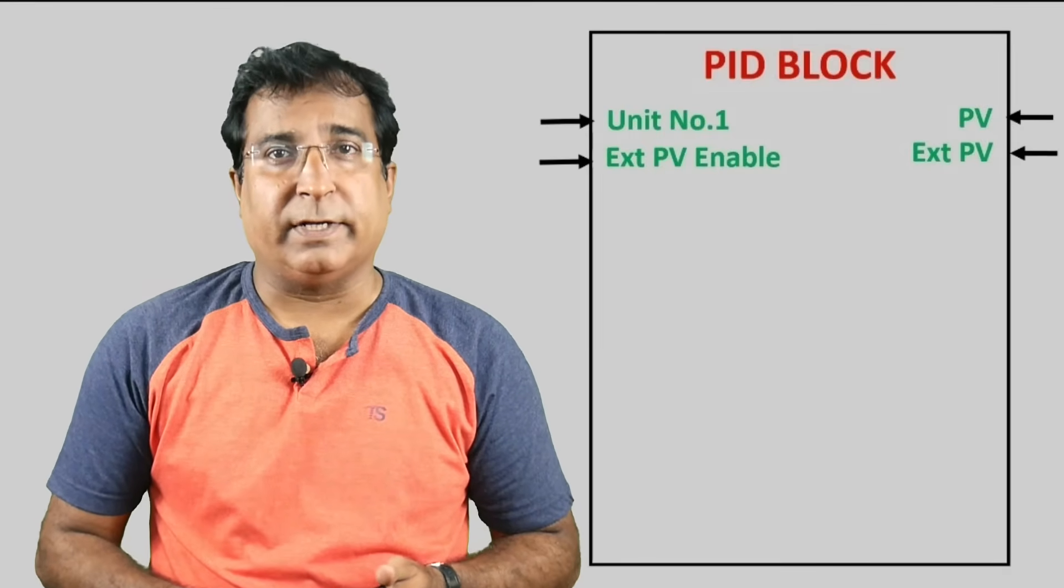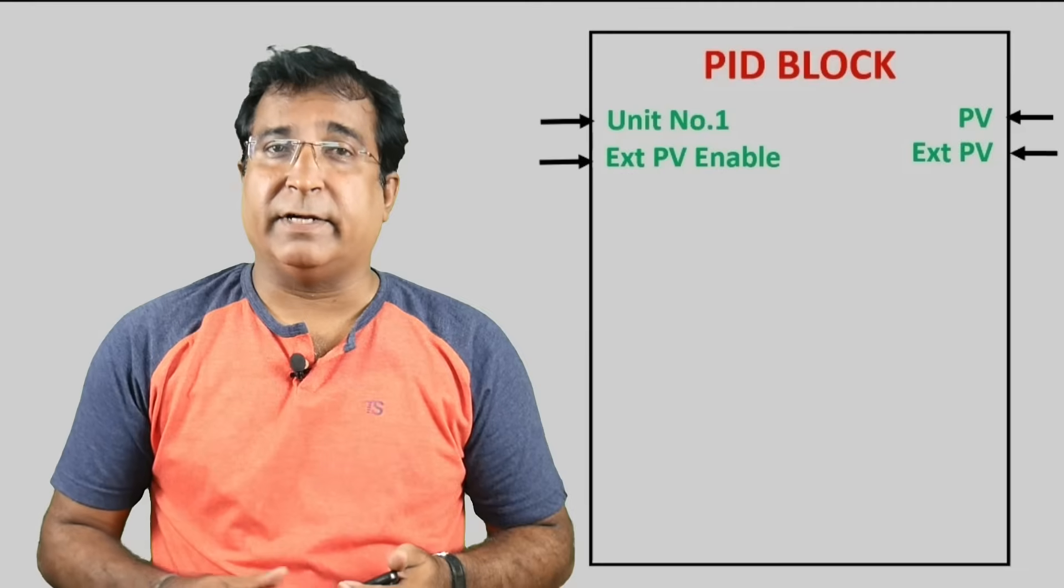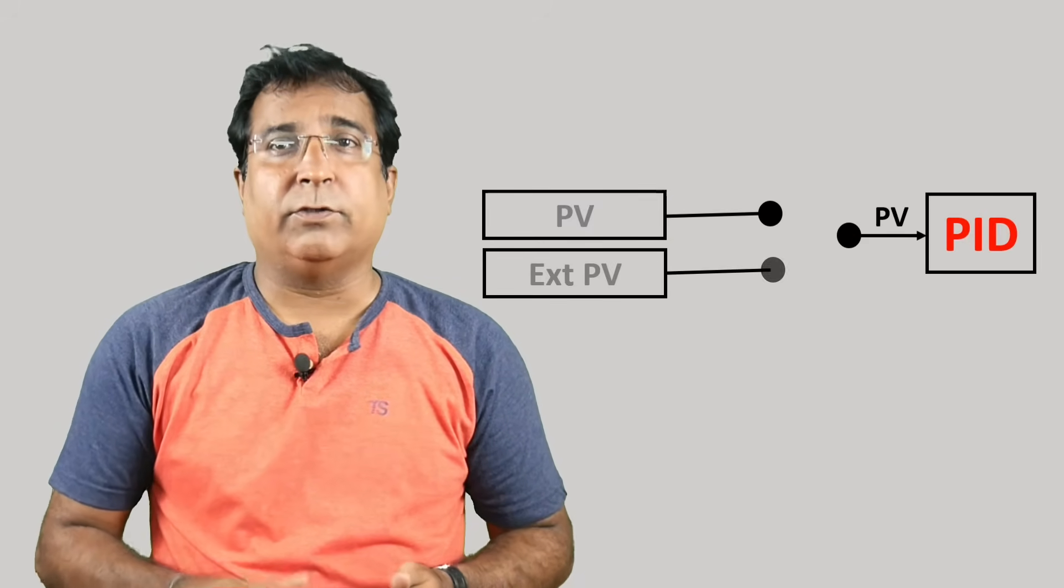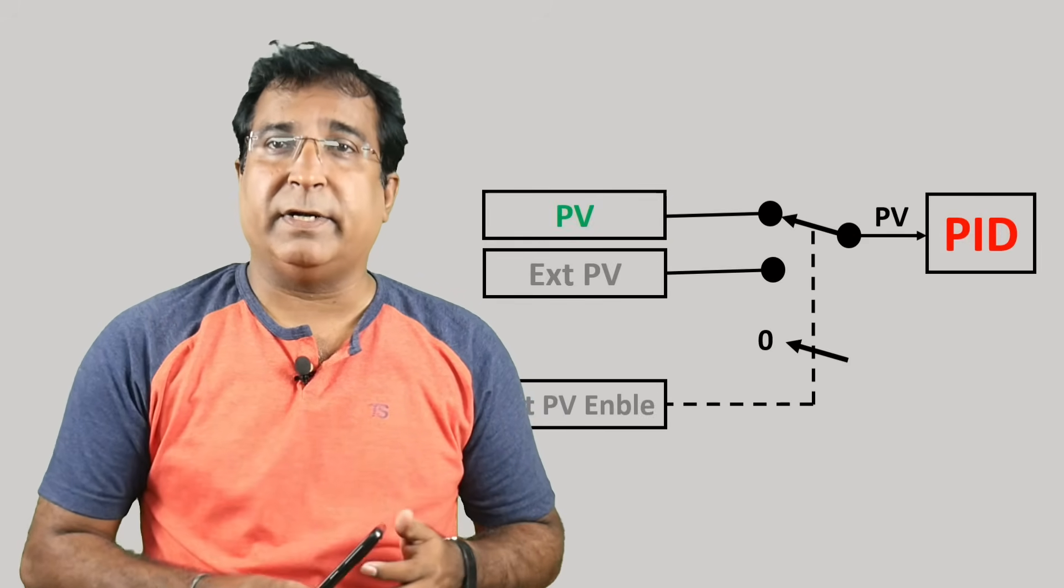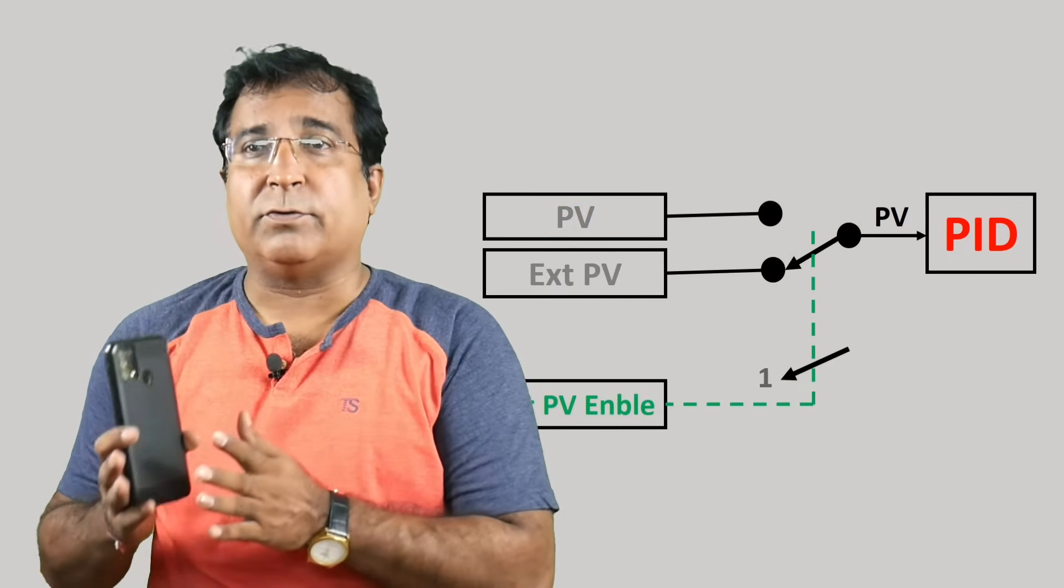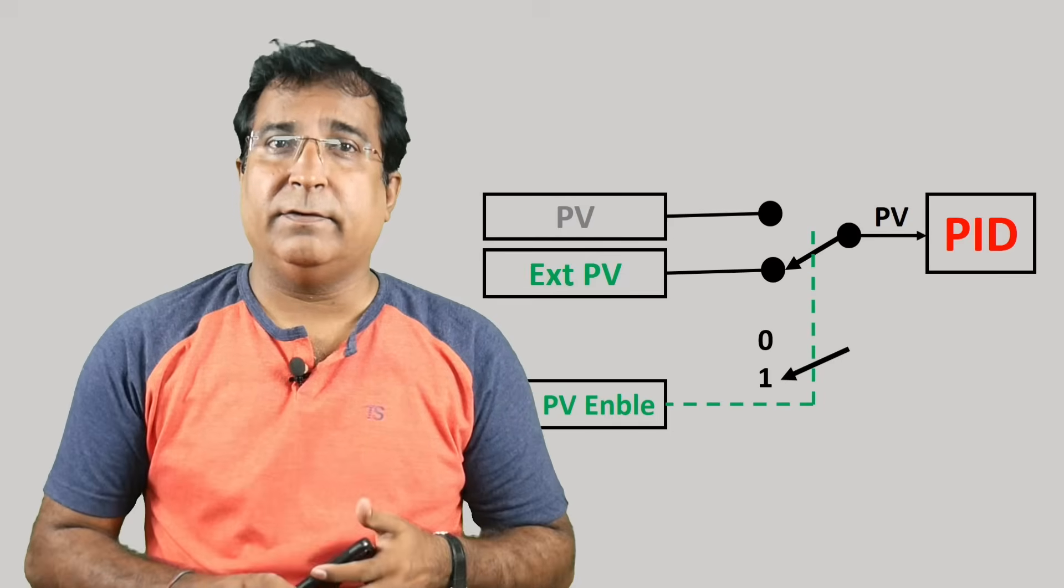This enable bit can also be any process condition like drive running, any level switch, pressure switch - I mean any process condition which enables this bit. You can see on the screen it is connected through with external enable bit, but with this bit the PID controller can switch between both process value and external process value.